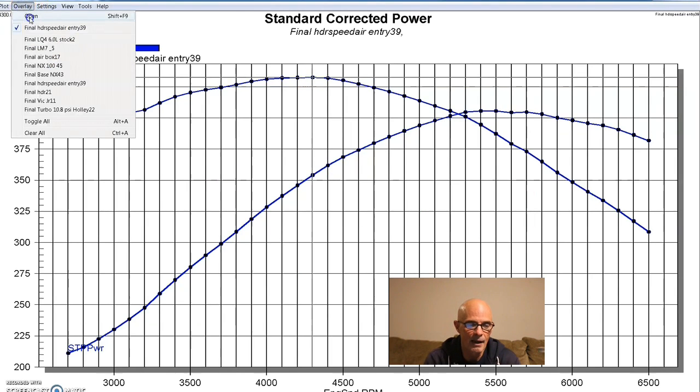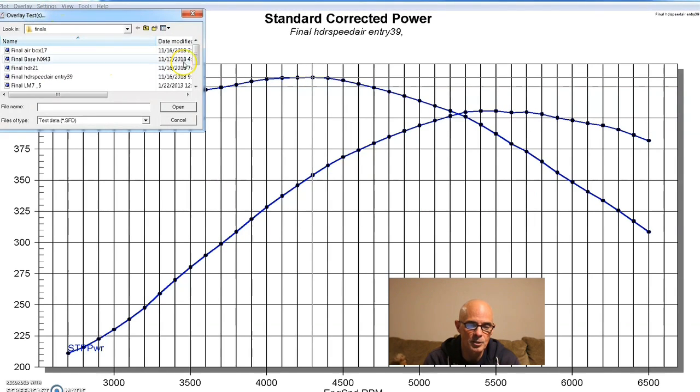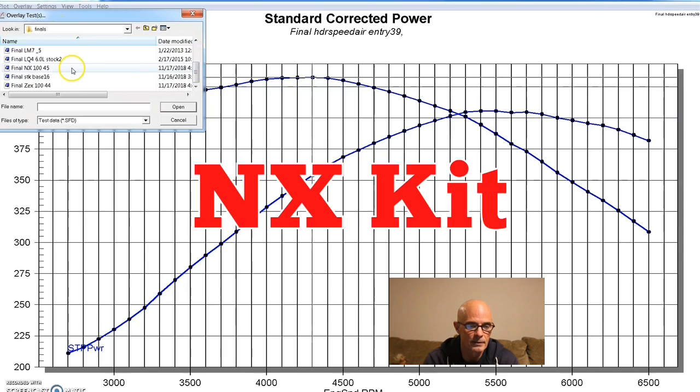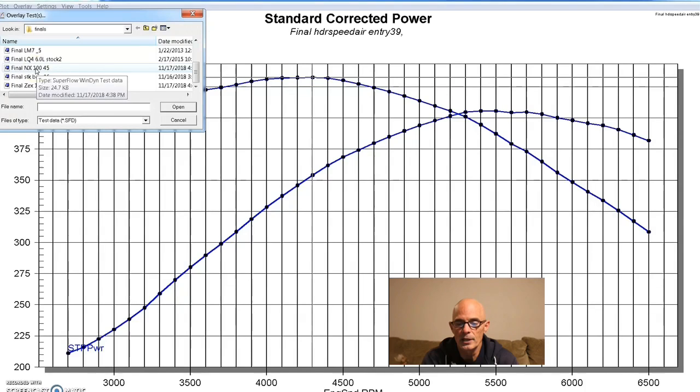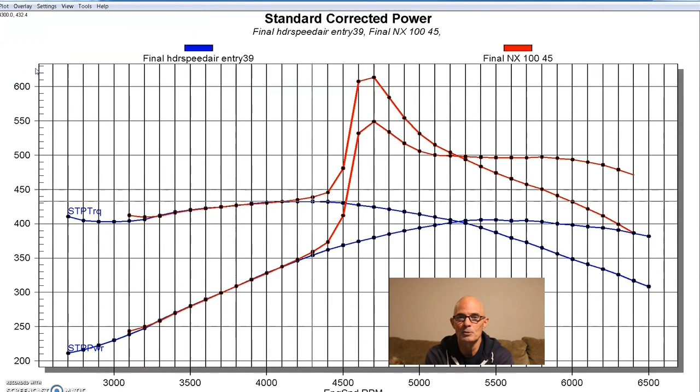Here's our NA motor at 405 horsepower and 432 foot-pounds of torque. Here's what happened after we introduced the Nitrous Express nitrous kit with 100 horsepower jetting. Look, we picked up 100 horsepower. That's exactly what nitrous is supposed to do. So we were right up near 500 horsepower, 498. And you can see it just picks up basically the same amount of power all the way through, which is kind of what nitrous does if you have the fueling right.